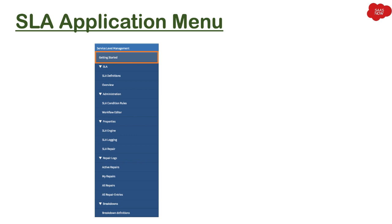Let's look at the SLA application menu. This is the application called Service Level Management. Under this application you have different modules. The first module is 'Getting Started' — clicking it takes you to the ServiceNow product documentation for SLAs. The next module under the SLA section is 'SLA Definitions', where you can create different SLA definitions in ServiceNow for your tables and tasks. Then we have the 'Overview' module, which shows you a dashboard with different charts related to SLA.